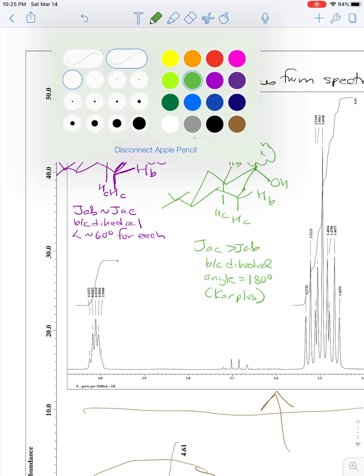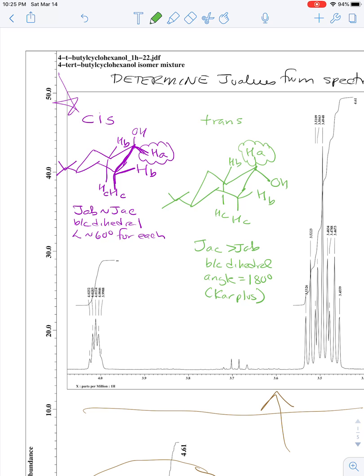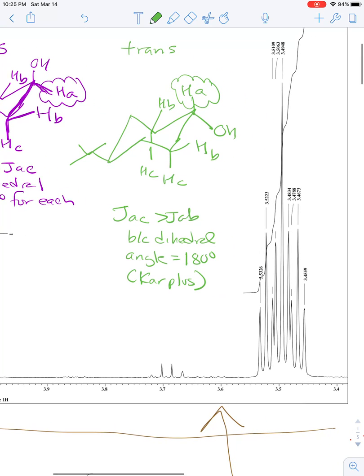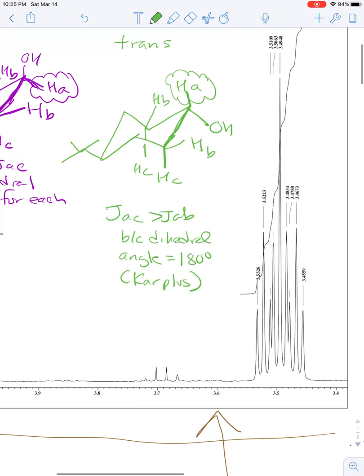On the other hand, if we look at the coupling constant for the trans product, you can see that the two dihedral angles are very different. JAC is about 180, whereas JAB is again about 60. So based on the Karplus curve, we're going to expect that JAC is going to be larger than JAB.